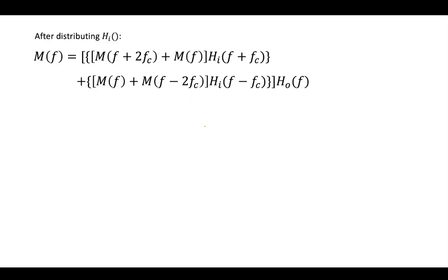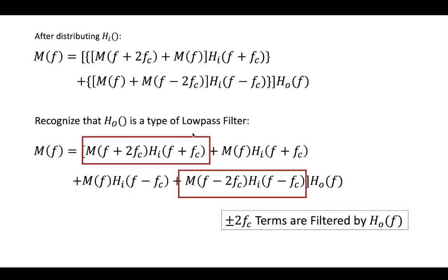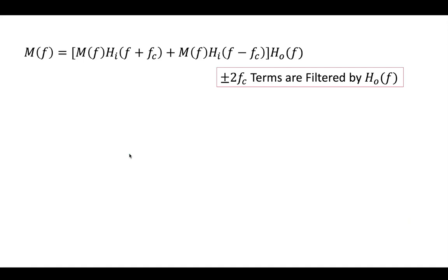So we've distributed our filter, and now we can see that because our hout is a type of low-pass filter to recover our baseband components, we can see that these terms are going to go away when we apply our hout filter. Our hout filter both complements hi and also, because it's a low-pass filter, removes these high-frequency message components. So after that filtering, we are left with this.